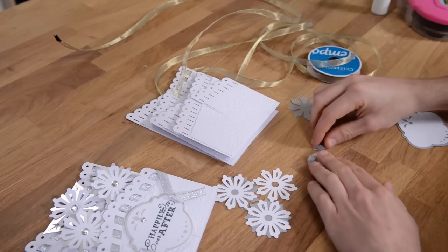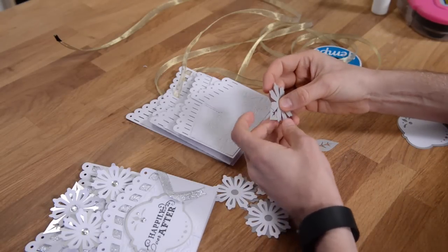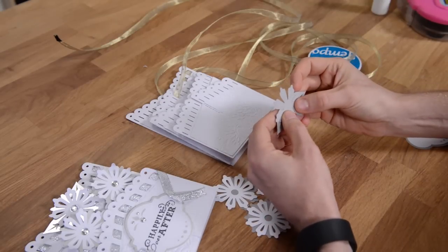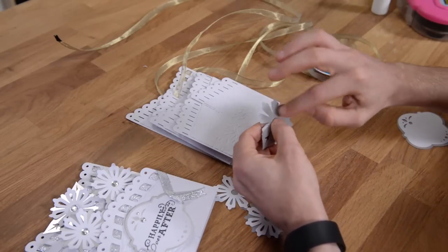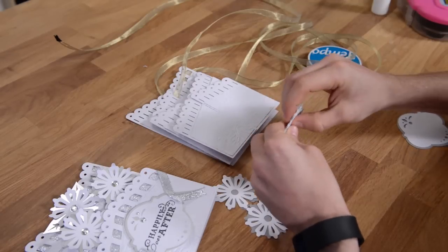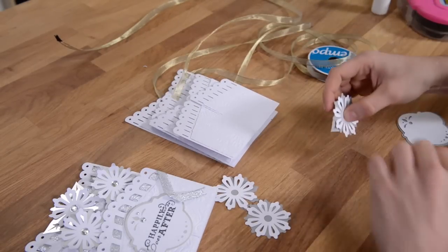Now that one's a little bit different because it does have some leaves on it. And all you're really going to do is just take those leaves and just attach those to the little pop dot that you have behind the shadow layer or the solid layer of the daisy. And that's going to get attached right there like so. So that's pretty much it.